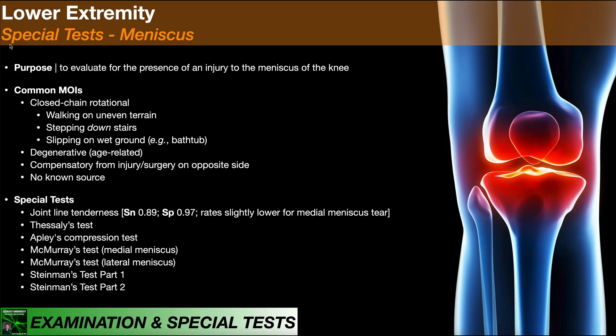In this video, we're going to be looking at the special tests used in the diagnosis of injuries to the menisci of the knee. Recall that in each knee there are two menisci: a lateral meniscus and a medial meniscus. These special tests are useful in making that diagnosis for both lateral and medial meniscus injuries.